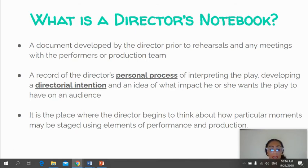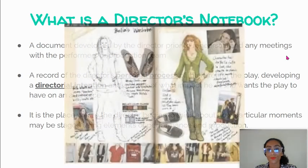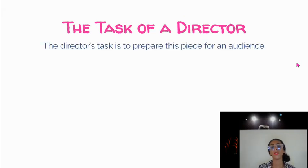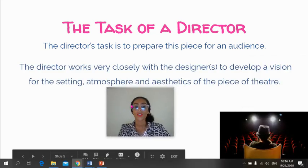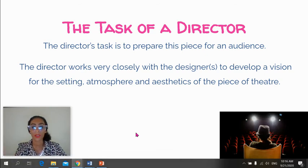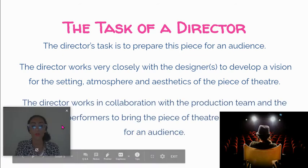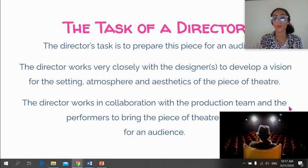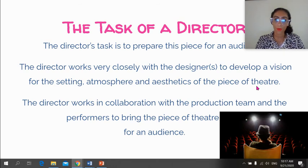It's also the place where the director begins to think about how particular moments might be staged using elements of performance or production. So it's usually a mixture of writing, blocking, images, cutting out the script and writing notes next to it — it's a practical notebook. Something like this might also form part of the director's notebook, particularly when looking at costuming for characters and staging. The task of a director is to prepare a piece of theatre for an audience, working closely with designers to develop a vision for the setting, atmosphere, and general aesthetics of the piece.